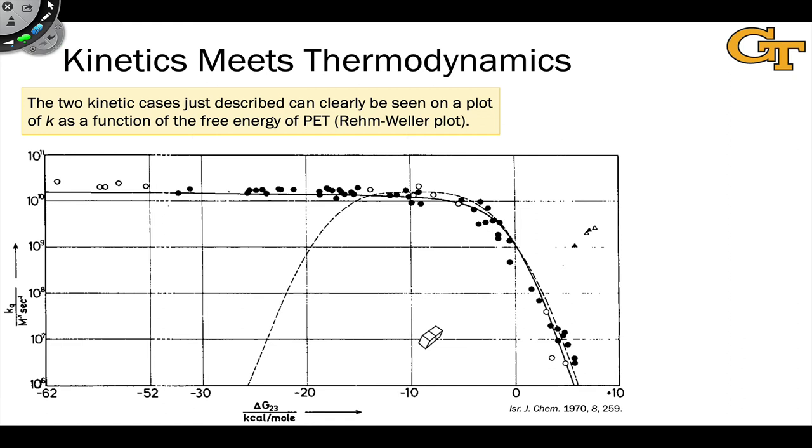Rehm and Weller did this back in the 1970s, and the graph that they generated is shown here. And we can see the two kinetic regimes that we talked about earlier very clearly in this graph.